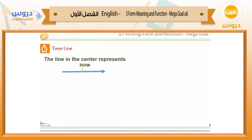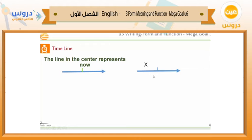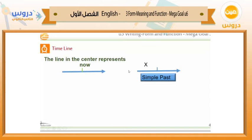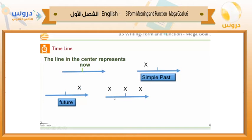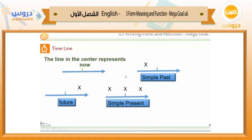Here is the timeline. This line in the center represents 'now'. If you see the X before this line in the center, that timeline represents simple past. What about future perfect? What about something happening regularly? That represents simple present. And what about something happening at this moment — that represents present progressive.